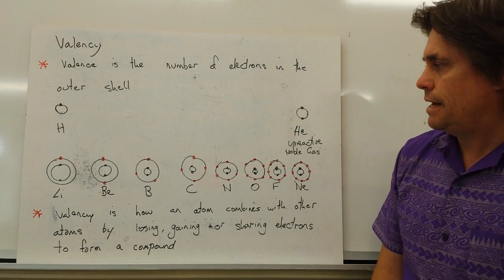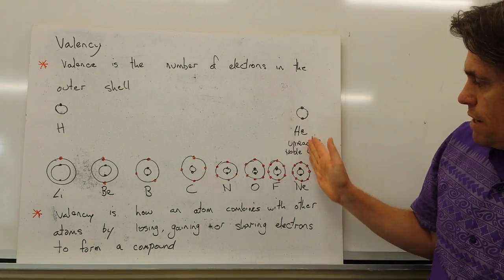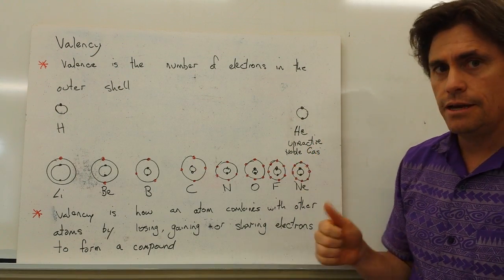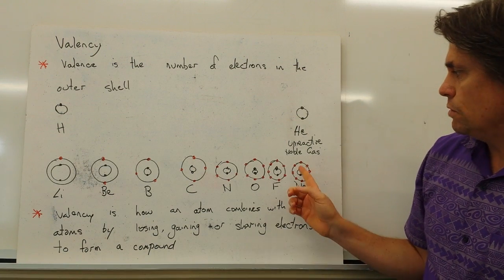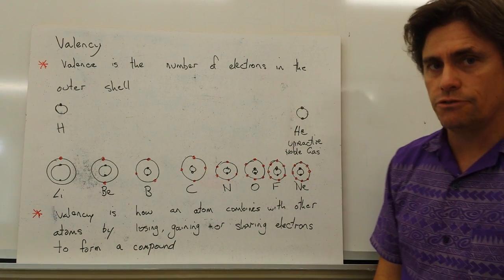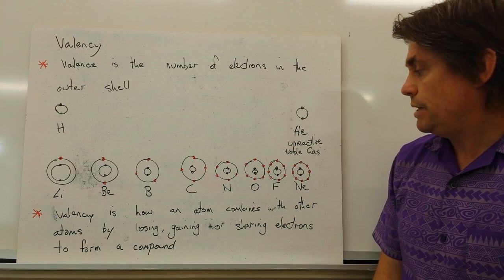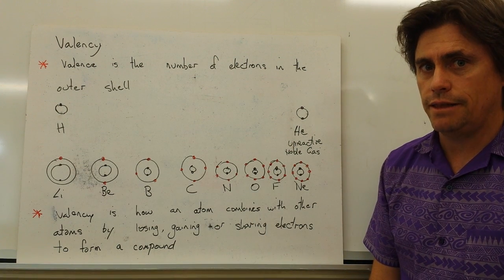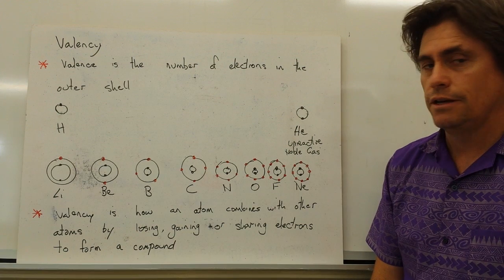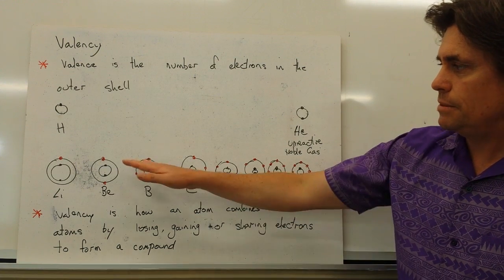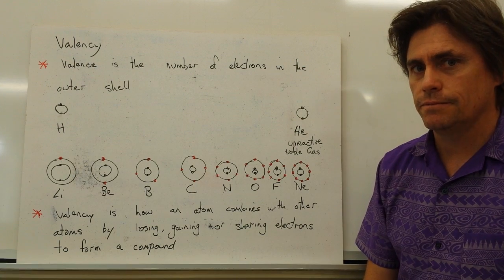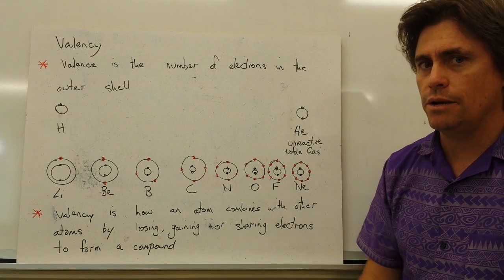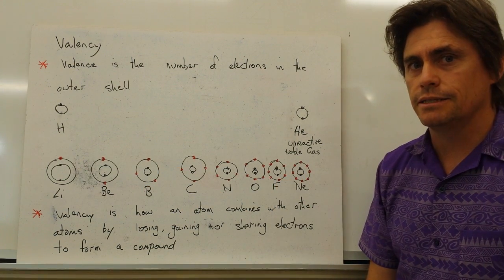A few things we can take from this. If we trace down the far right-hand column in our periodic table — our noble gases — they have the property of being unreactive. They also all have eight electrons in their outer shell, and we call that the noble gas structure. Other atoms try to achieve that noble gas structure of having eight electrons in their outer shell, and they combine with each other to try to get this noble gas configuration.